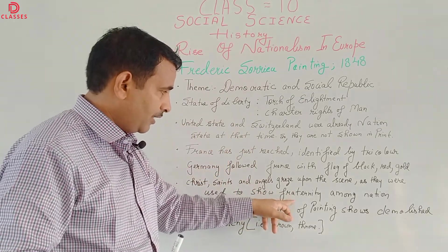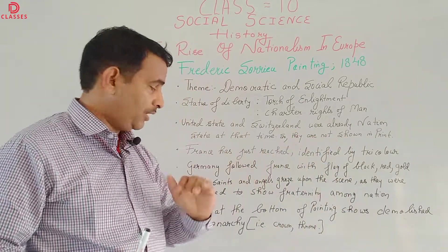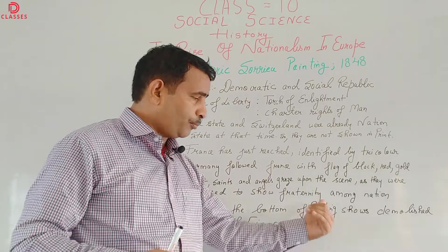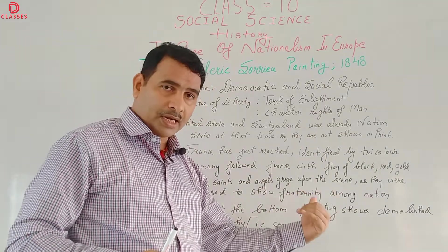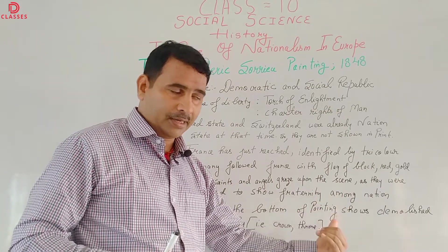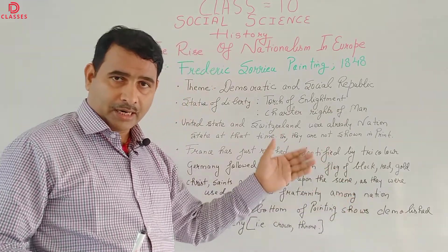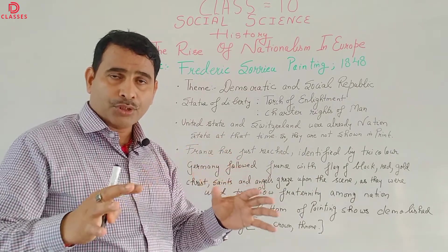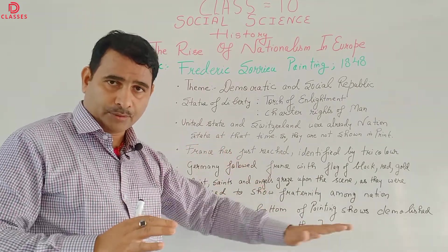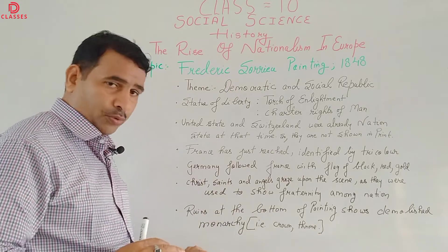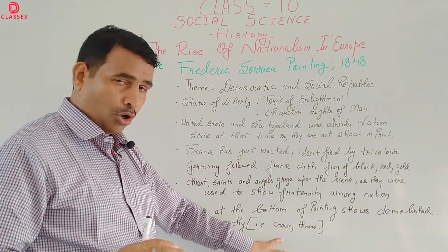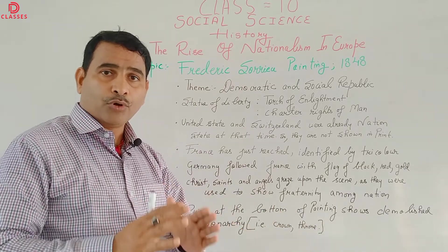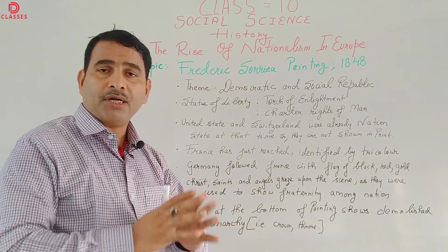What is meant by fraternity among nations? The last topic is the ruins at the bottom of the painting. You will see that crowns and ruins of the sword and throne are shown by the artist. This shows that the monarchy system is being demolished.